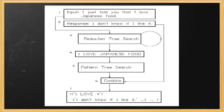Here's a specific example. Suppose the input in a transcript is, I just told you that I love Japanese food. And the response is, I don't know if I like it. So the reduction tree search or the canonicalization takes that input and converts it into the simpler form, I love Japanese food.